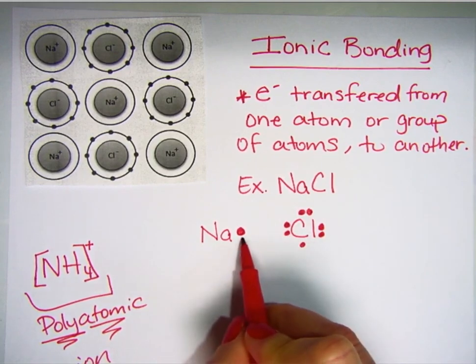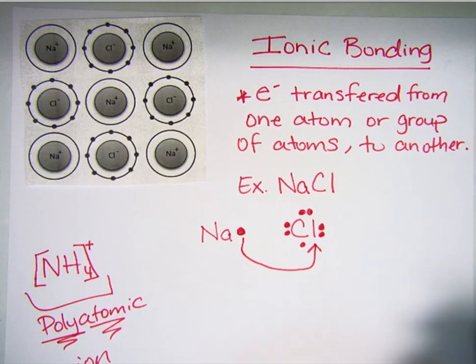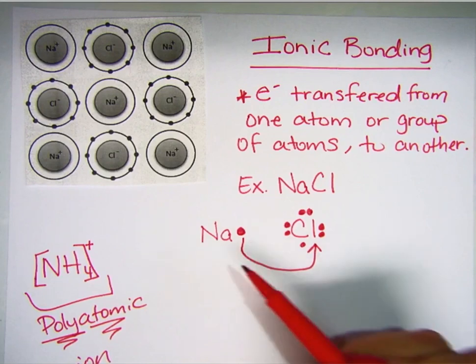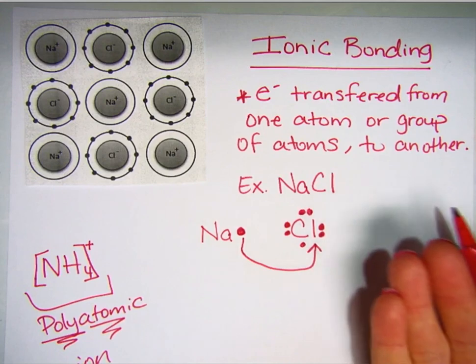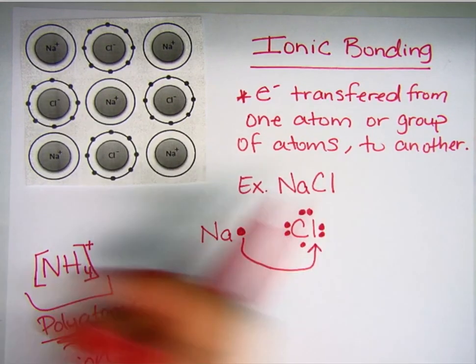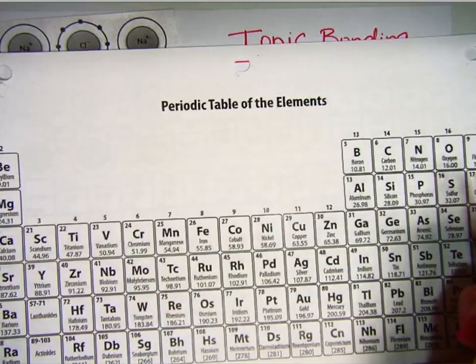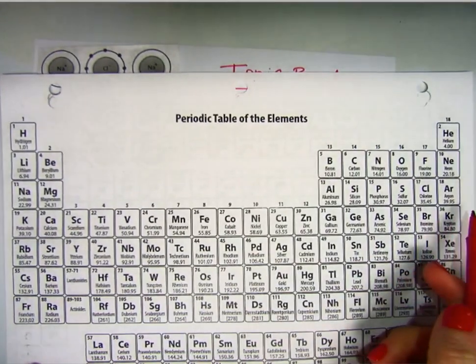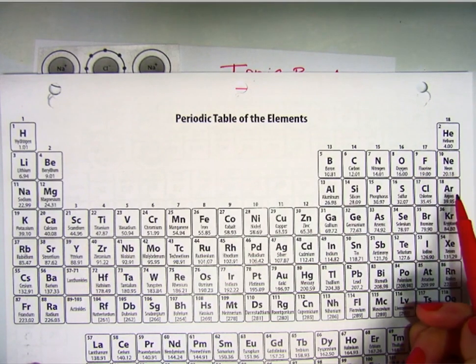Sodium will donate this valence electron to chlorine, so that chlorine now has a full shell, and sodium has given up its outer shell, which basically exposes a filled shell underneath that. This goes back to ionic stability. Sodium is more stable if it loses one electron to be like the nearest noble gas, which is neon. And chlorine is more stable if it gains an electron to have a configuration like argon.